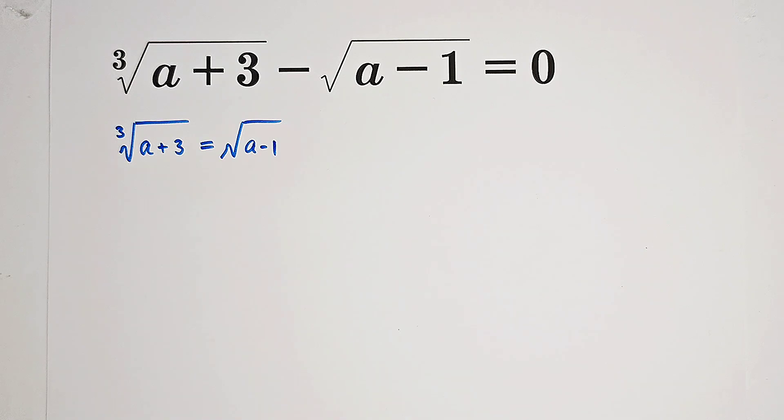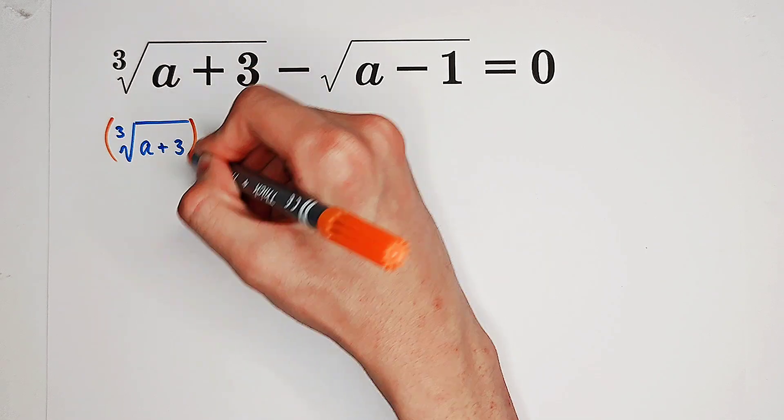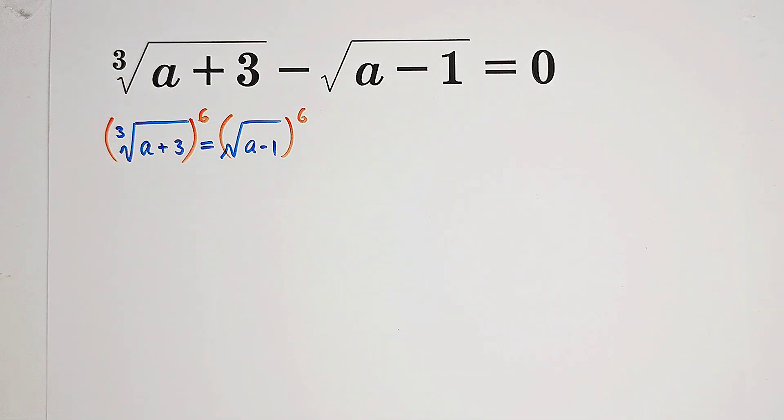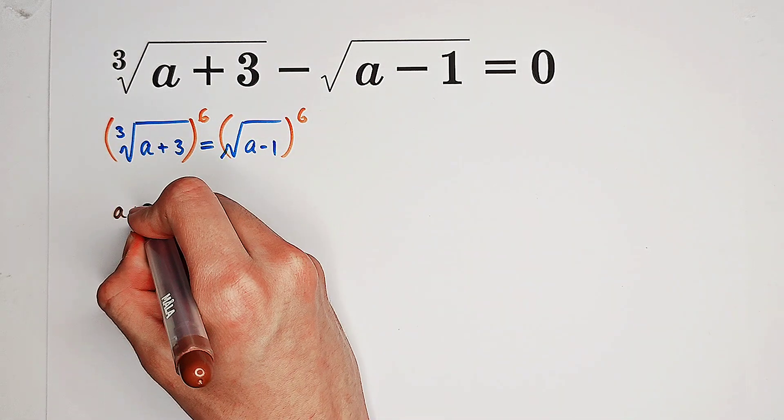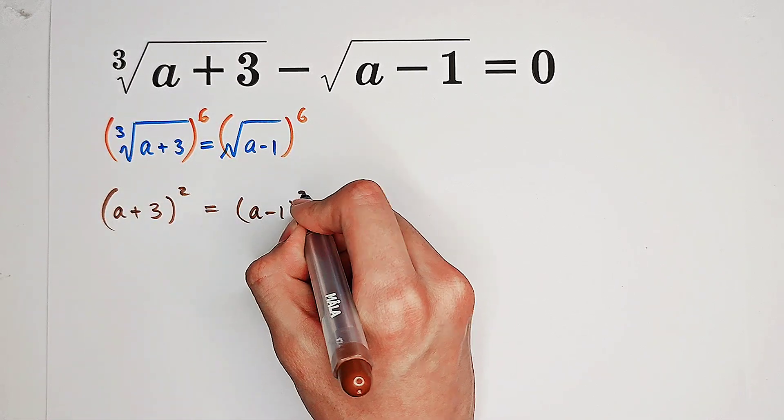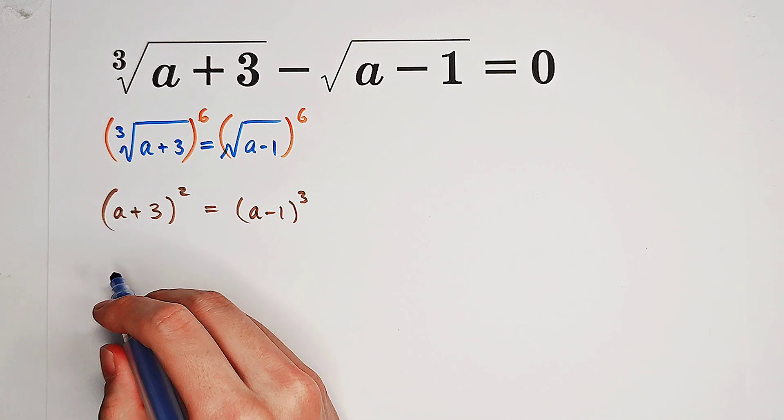Then what shall we do? Now we can see the left side is a cube root and the right side is a square root. So now we can raise both sides to the power of 6. Very good!